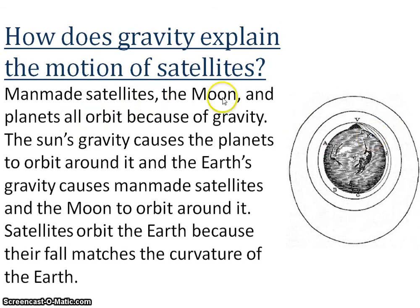So man-made satellites, the moon and planets all orbit because of gravity. The sun's gravity causes the planets to orbit around it, and the Earth's gravity causes man-made satellites and the moon to orbit around it. Satellites orbit the Earth because their fall matches the curvature of the Earth.